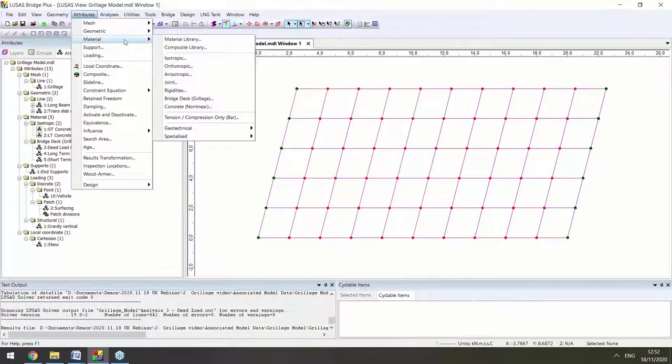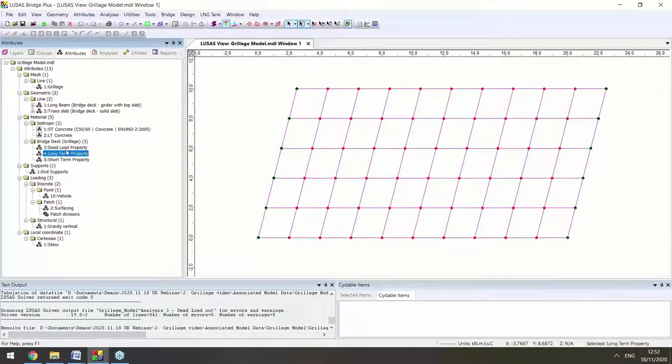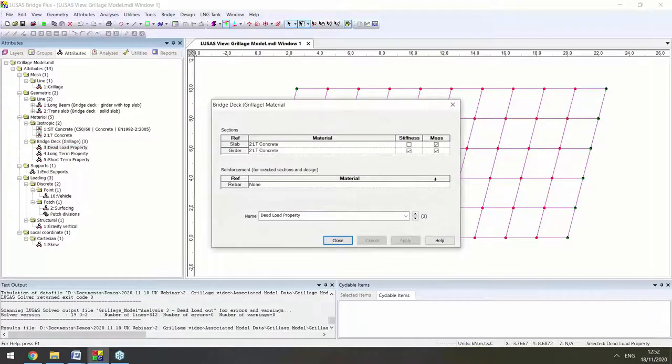We've also got new grillage material properties, and these ones I've defined earlier, such as this one for dead load, where we've included the mass of the slab, but not the stiffness of it. So this will allow us to consider the weight of the wet concrete from the slab acting as a load on the girder, which does have stiffness and therefore carry the load. I've also in this model got a long term property where we've included the stiffness of both the slab and the girder.